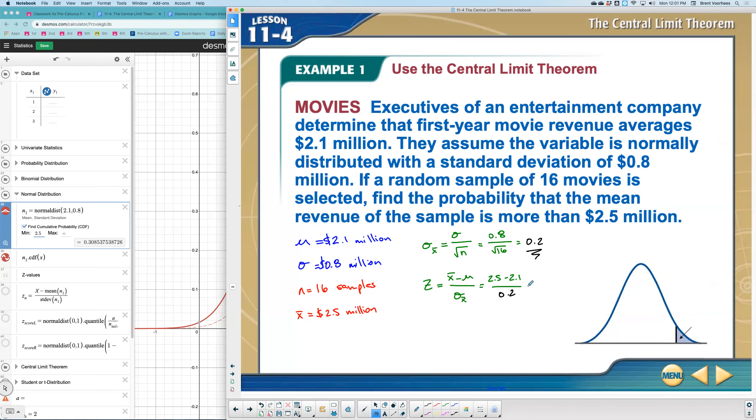What is this value going to give us? Well, 2.5 minus 2.1 is 0.4. When you divide that by 0.2, you get 2. So that's the Z value.